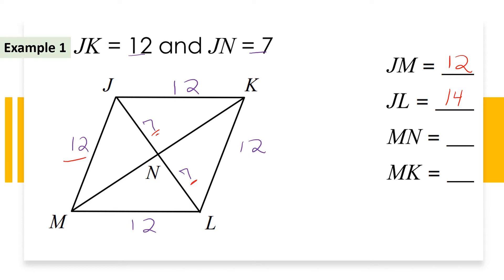For MN, we don't have that length directly because the diagonals are not congruent — they just bisect each other. But we do have two sides: 7 and 12, and we know there's a right angle at the intersection. So we can use the Pythagorean theorem: a squared plus b squared equals c squared.